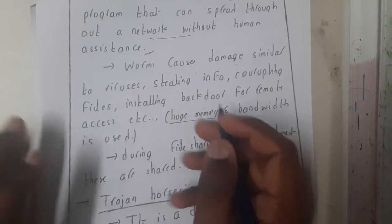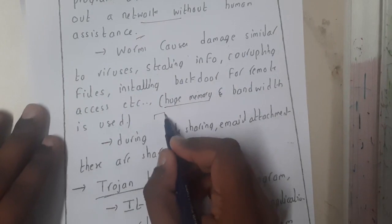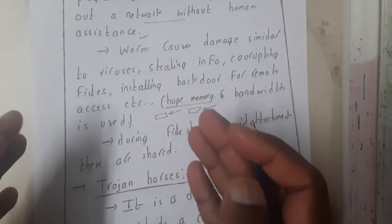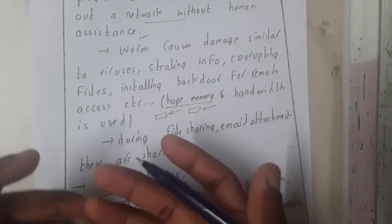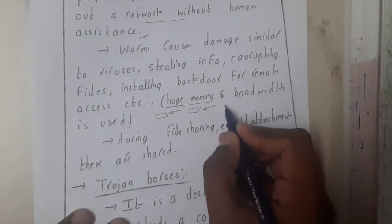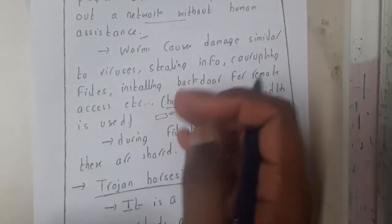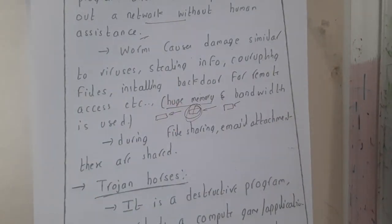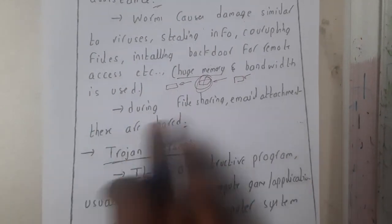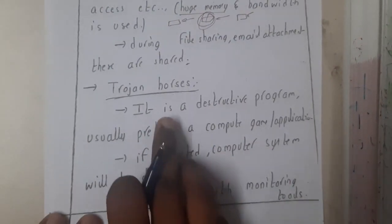Worms use a huge amount of memory. You may notice that even though your files are around 10 GB, an extra 200 MB to 1 GB of disk space is occupied with nothing visible there. That occupied space is caused by viruses or worms taking up memory. Worms can also be received during file sharing or email attachments.